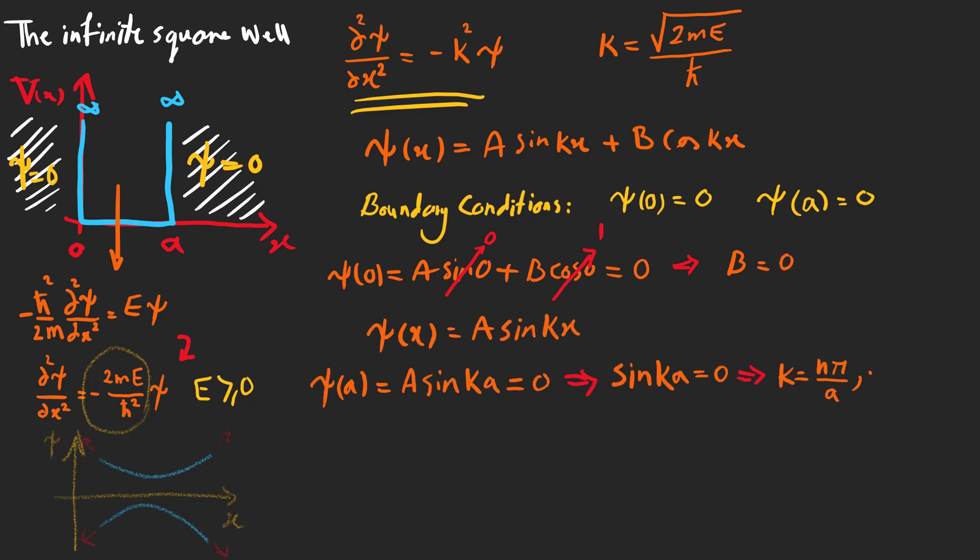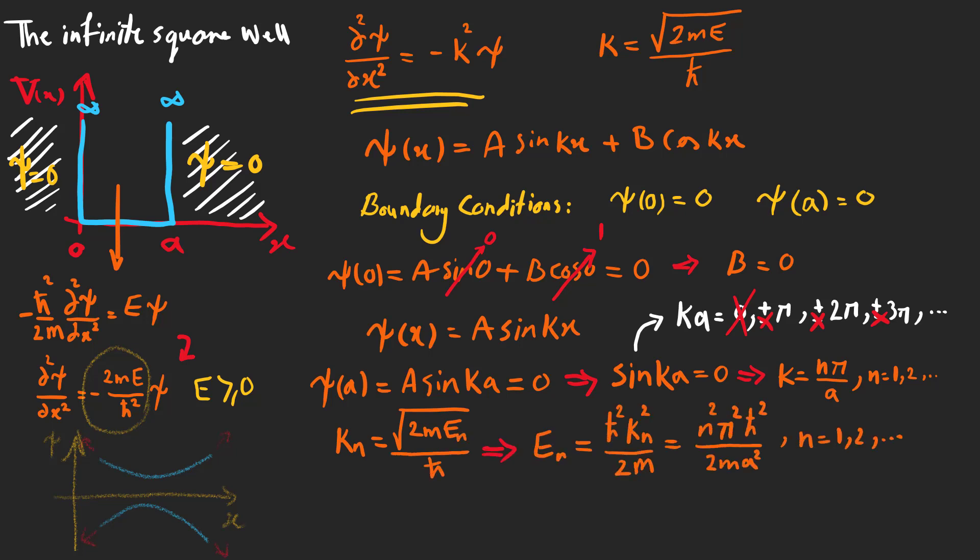The second boundary condition gives k equals n*pi over a and we have an infinite set of solutions for k. Pay attention that n starts at 1 because for 0, k psi(x) is always 0, and also we don't consider negative answers because they have nothing new. Now that we have found different k's, we have the particle's possible energies.